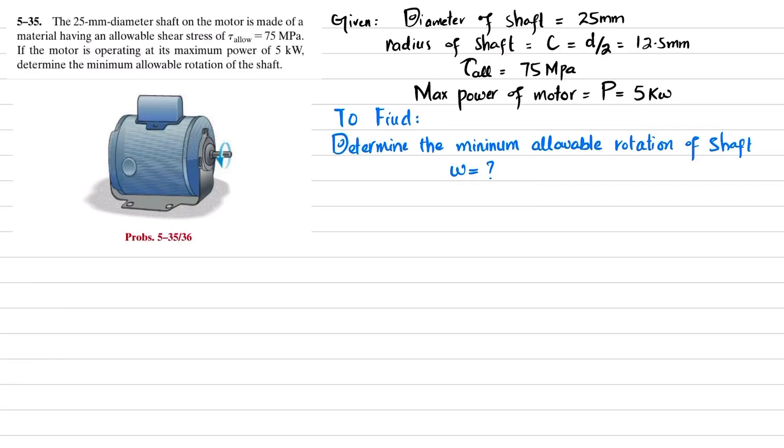Welcome back to problem 5-35. The problem statement is: the 25 millimeter diameter shaft of a motor is made of material having allowable shearing stress of 75 megapascals. If the motor is operating at its maximum power of 5 kilowatts, determine the minimum allowable rotation of the shaft. You can see this is the motor and this is the shaft which is rotating with some angular velocity.